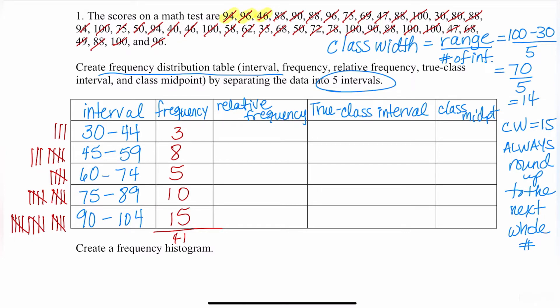[Counting 1 through 41] So sure enough, we have 41 numbers, so we are correct. Now that we've done all of that, it's a lot of work, very tedious.